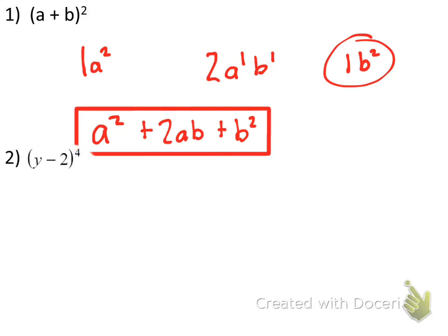Sorry, it's a little bit cut off there. Number 2, our first term is y. Second term is negative 2. Exponent is 4. We have to go to the fourth row of Pascal's triangle, and we find the coefficients of 1, 4, 6, 4, and 1. Put those out, and you can see I spread them out across my paper or my screen. You should do the same thing.